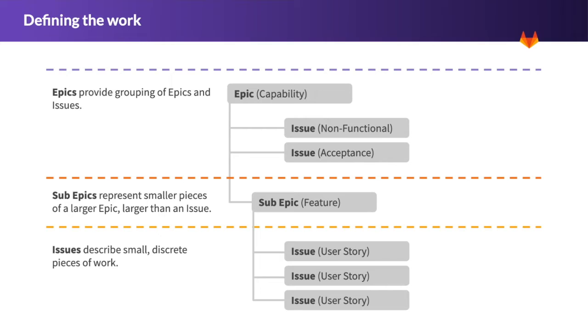Issues describe small, discrete pieces of work. Some systems call them a user story, a bug, or a defect, and the idea is that issues contain as little or as much definition as needed to accomplish the actual work defined.